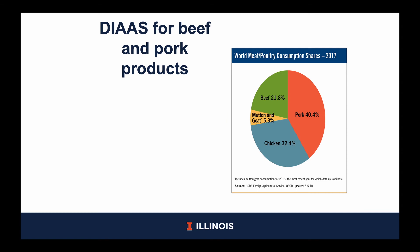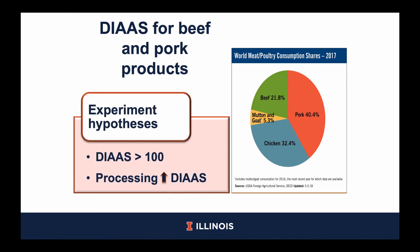The Stein Monogastric Laboratory recently determined DIAAS for beef and pork products. We thought these animal proteins were important because pork is the most widely consumed meat in the world and beef is the third most widely consumed meat in the world. For the experiment, we wanted to test the hypotheses that both pork and beef products have DIAAS greater than 100 and that processing will increase the DIAAS of these products.